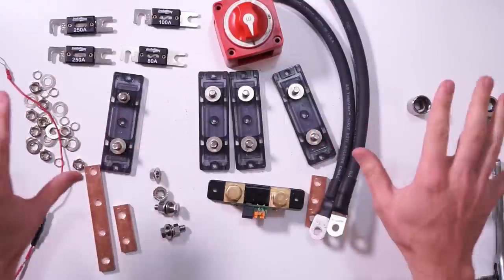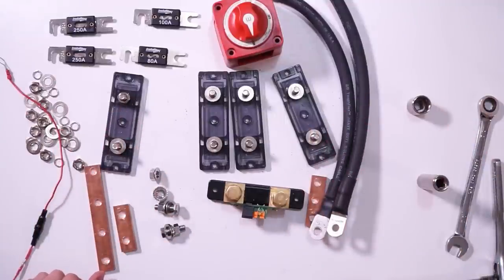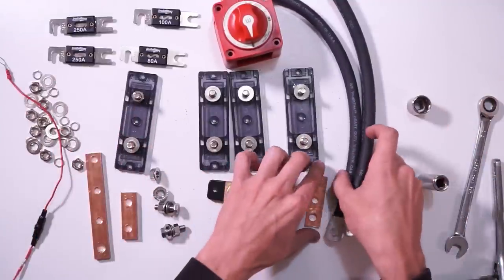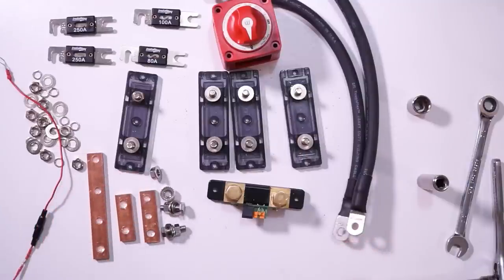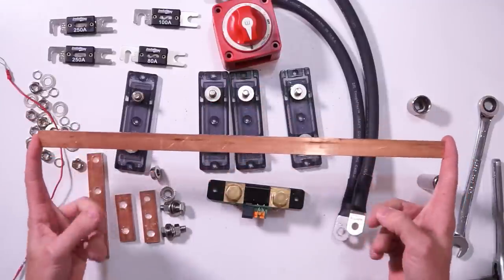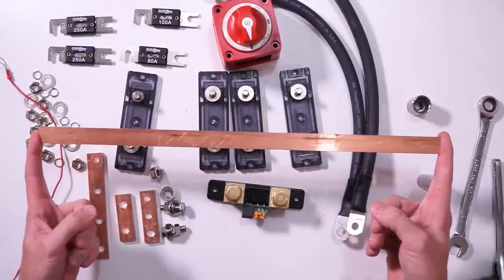Now we have it totally disassembled and we are ready to start working. The first thing that we needed to do was we needed to get these three bus bars here and they needed to be cut from this piece of copper bar stock. And here's how we did that.